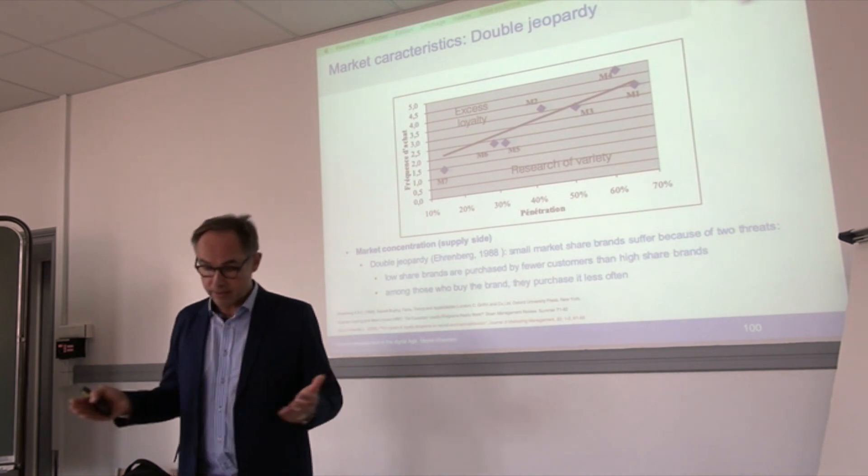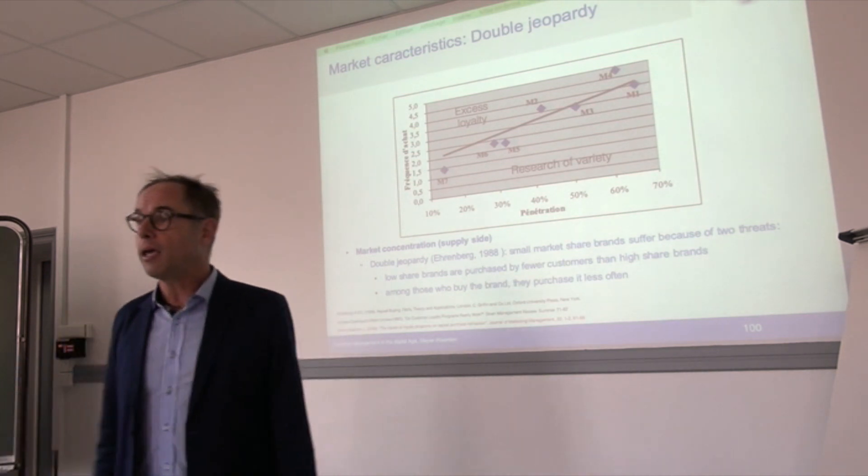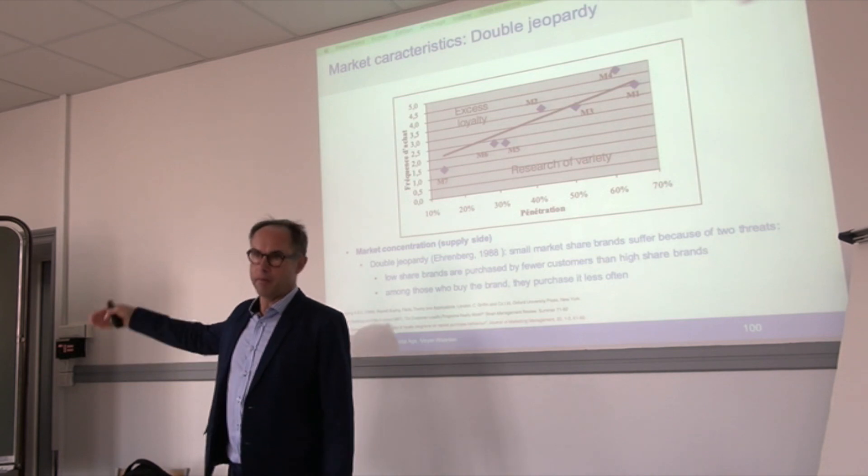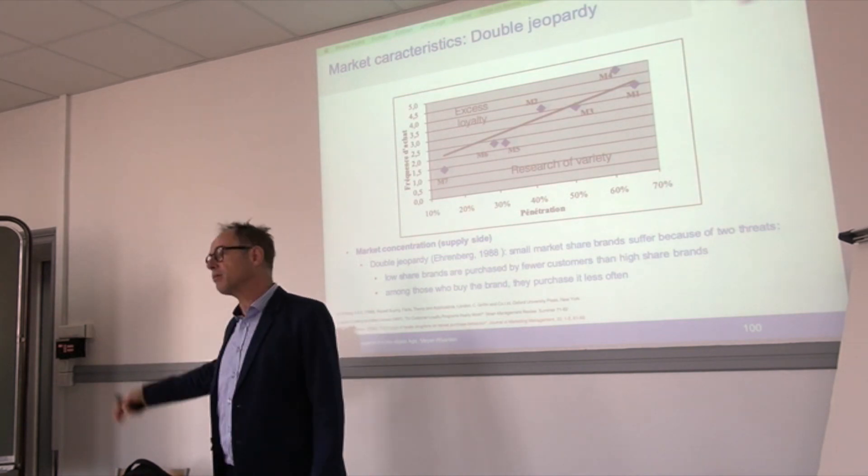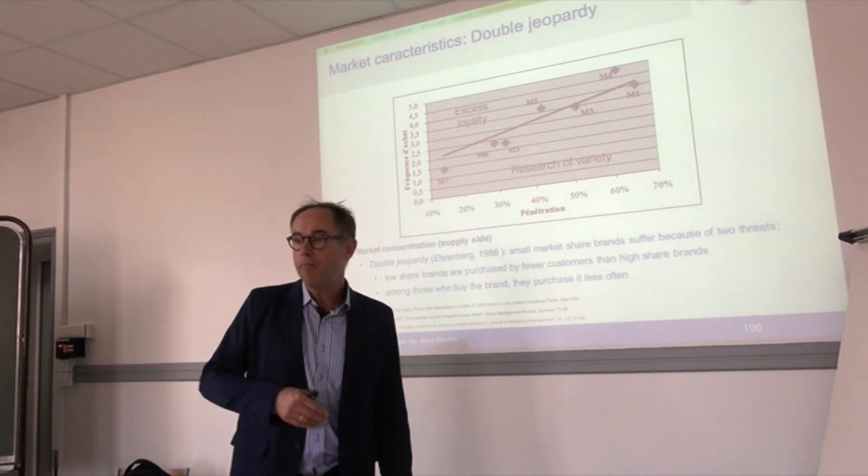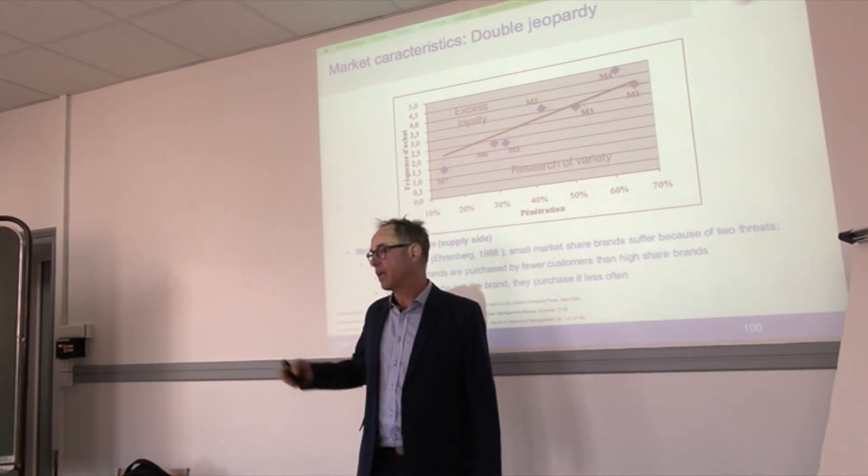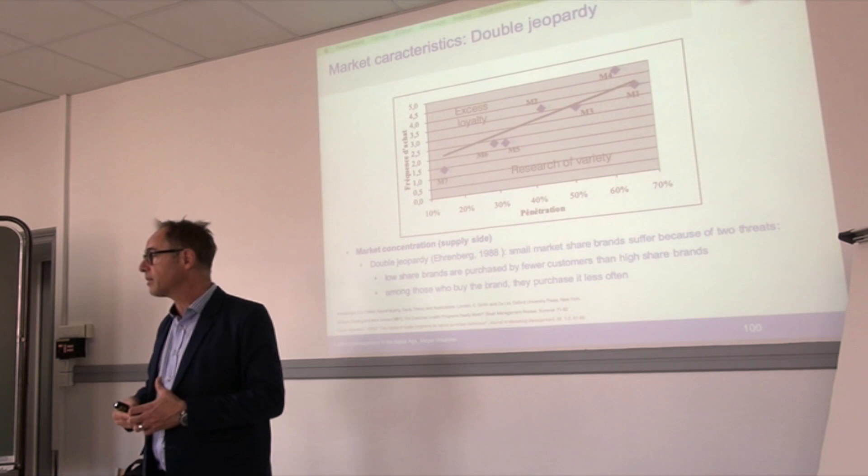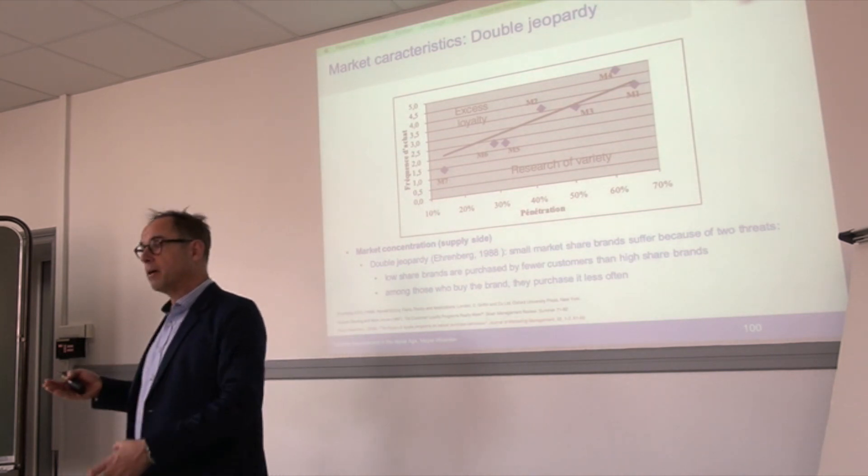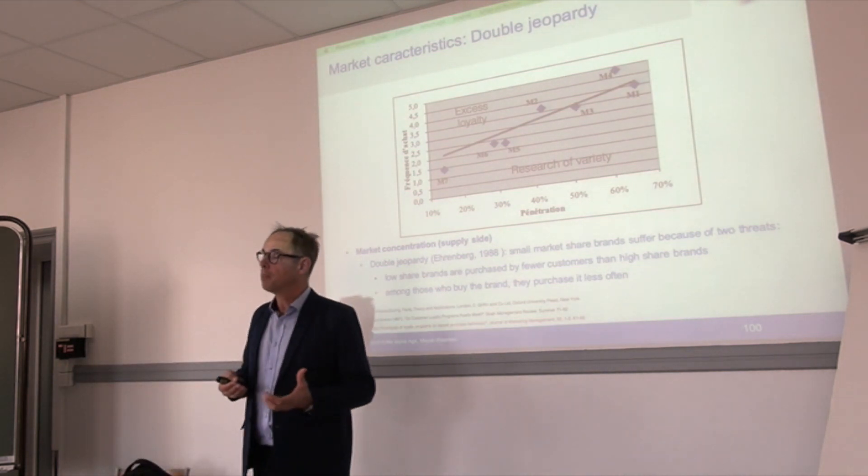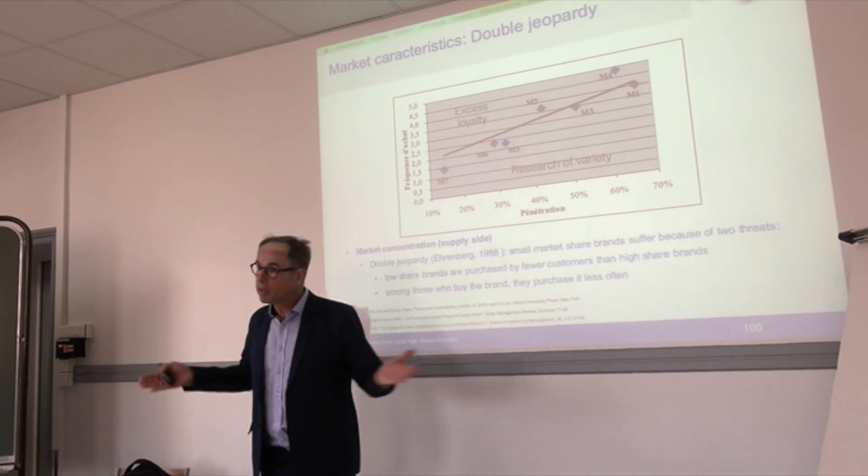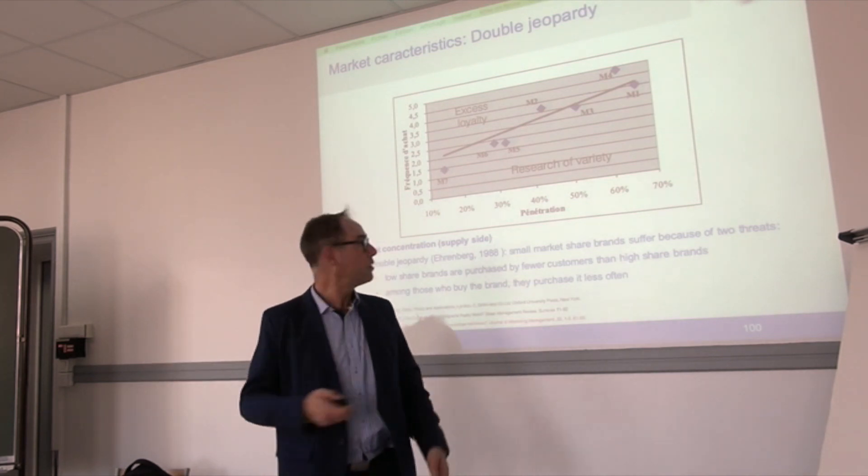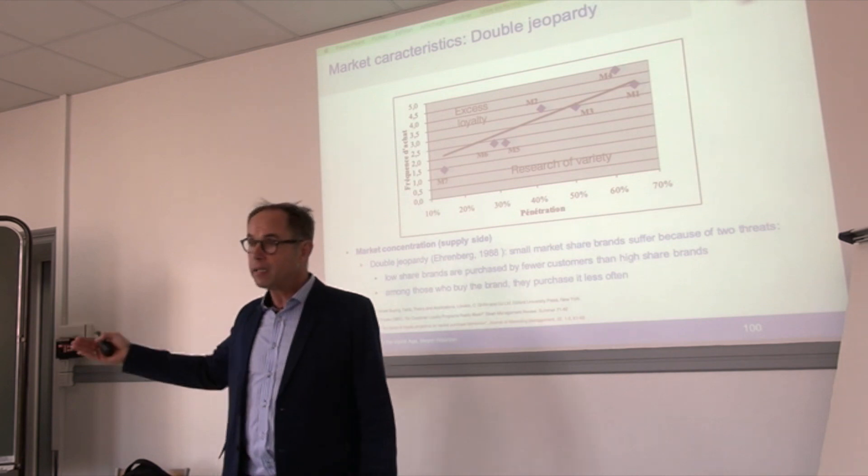That is why the only issue in competitive markets is creating niche positions through a special position, and that's valid for all contexts. How should we act in online retail with major actors such as Amazon or in China, Alibaba? What is the adequate strategy? The adequate strategy is to create a niche website, to differentiate yourself as Amazon and Alibaba are generalists. You might achieve a niche position, but you cannot be a generalist because it's too difficult. All you will achieve is double jeopardy. You have to find a positioning.